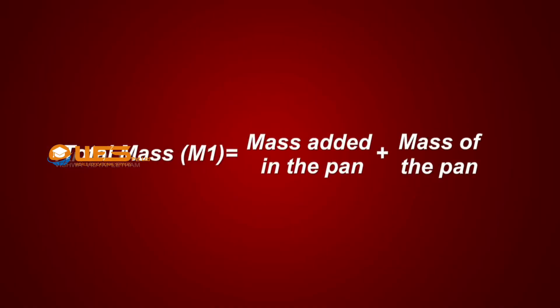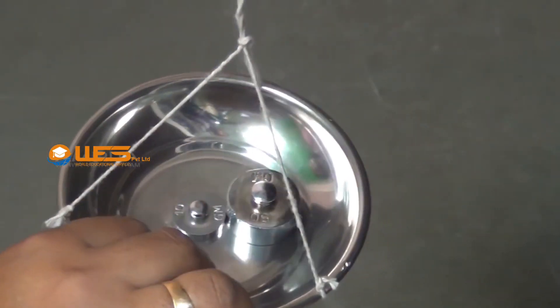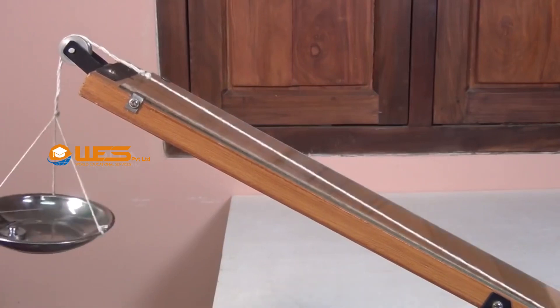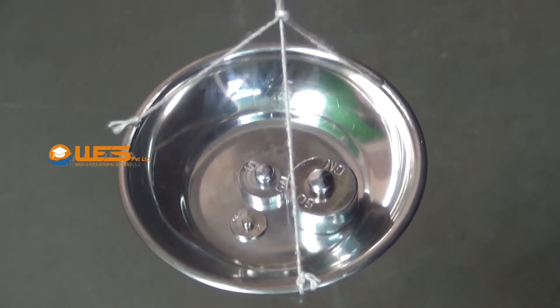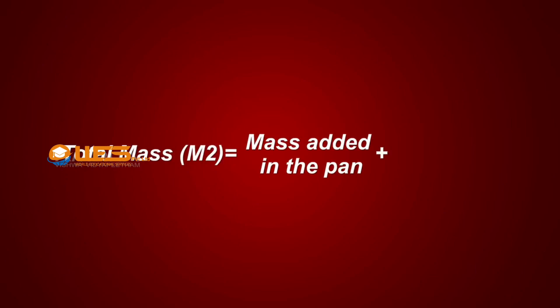Now the total mass m1 becomes the mass added in the pan along with the mass of the pan. Remove some weights from the pan till the roller just starts moving downward with uniform velocity. Note down the total mass of the pan and the mass added in the pan as m2.